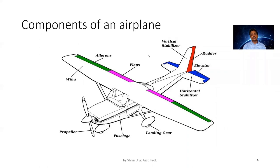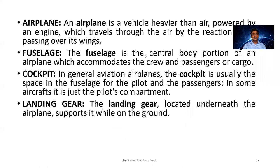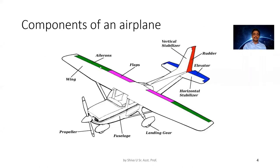We are talking about the components of the airplane — the primary control surfaces: ailerons, elevators, rudders, and secondary control surfaces.